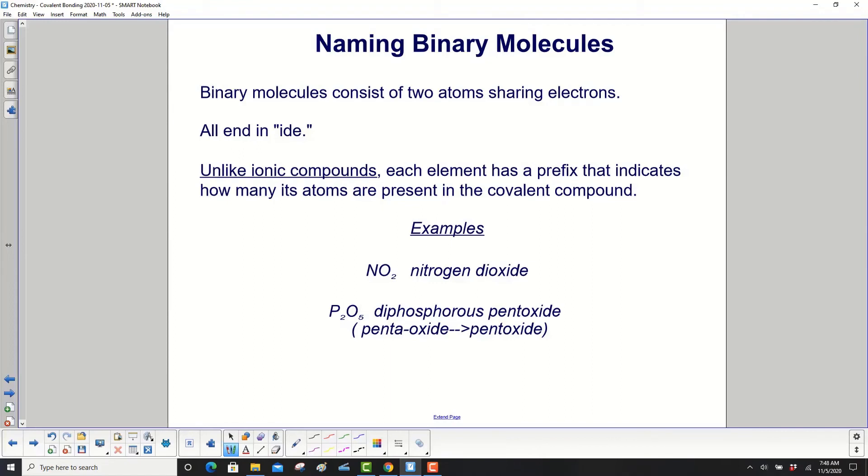Binary molecules consist of two atoms sharing electrons. All end in "-ide", like the Ides of March. Unlike ionic compounds, each element has a prefix that indicates how many of its atoms are present in the covalent compound.